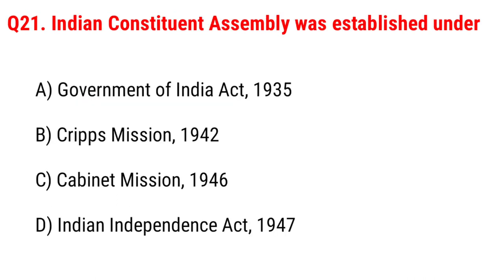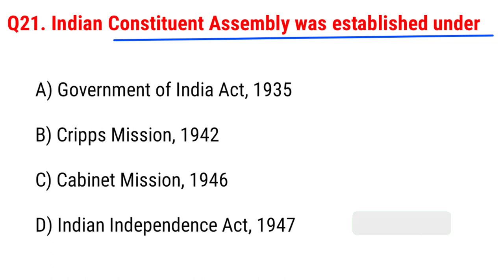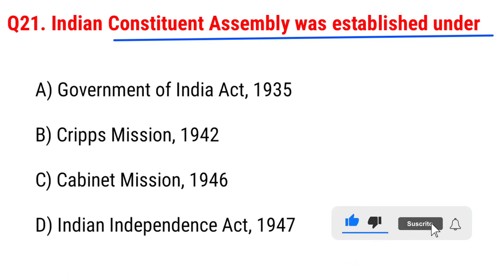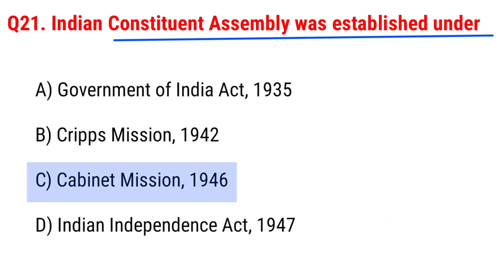Next question: the Indian Constituent Assembly was established under Option A, Government of India Act 1935; B, Cripps Mission 1942; C, Cabinet Mission 1946; D, Indian Independence Act 1947. The right answer is Option C, Cabinet Mission 1946.